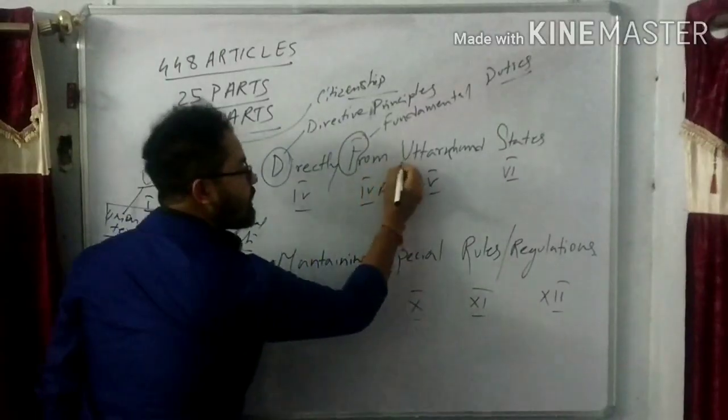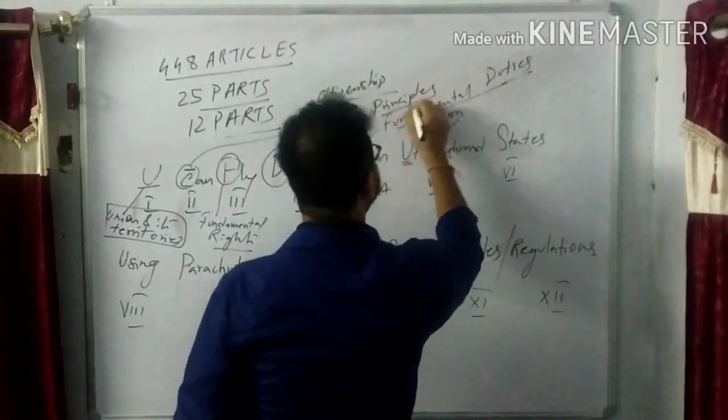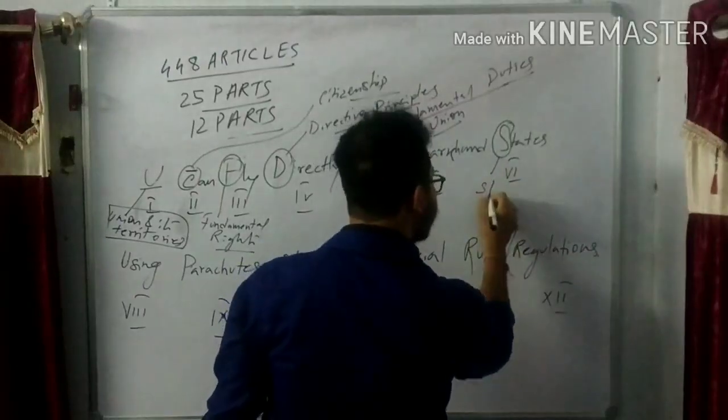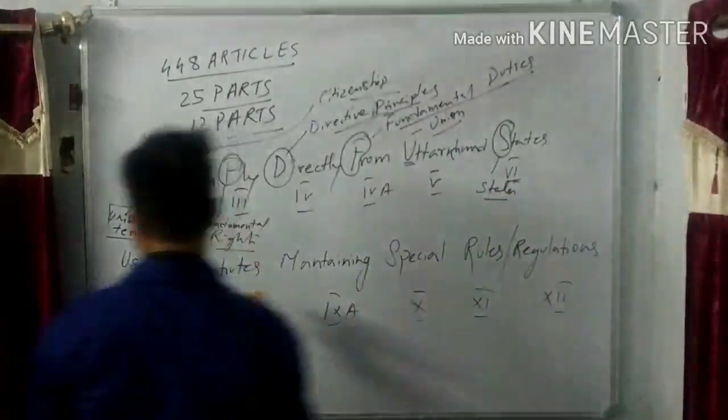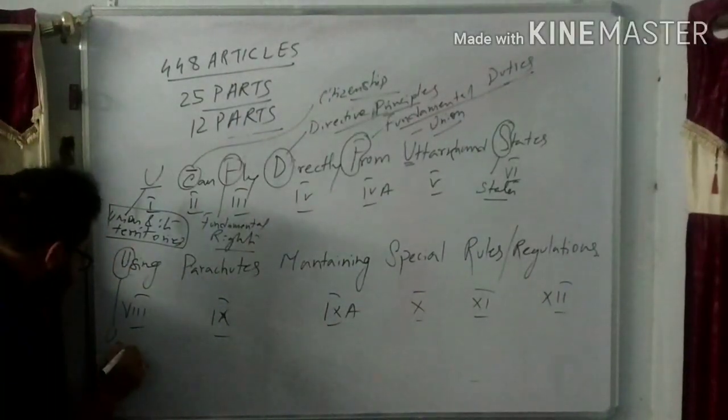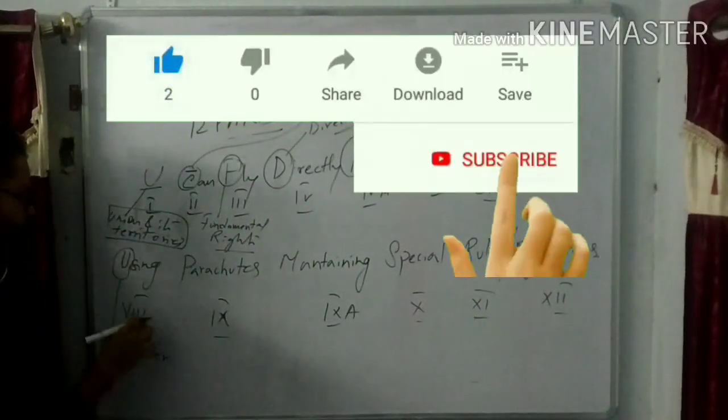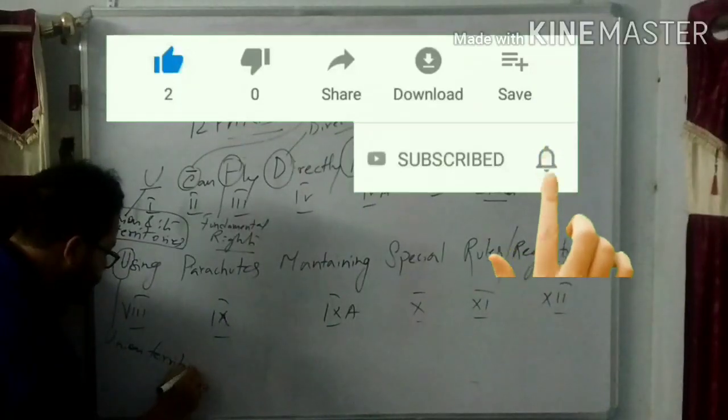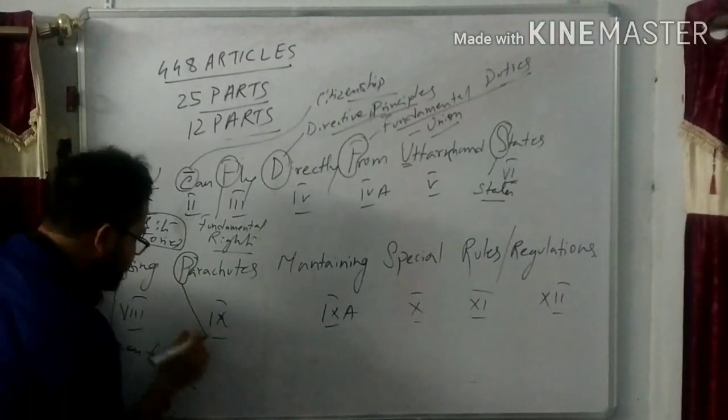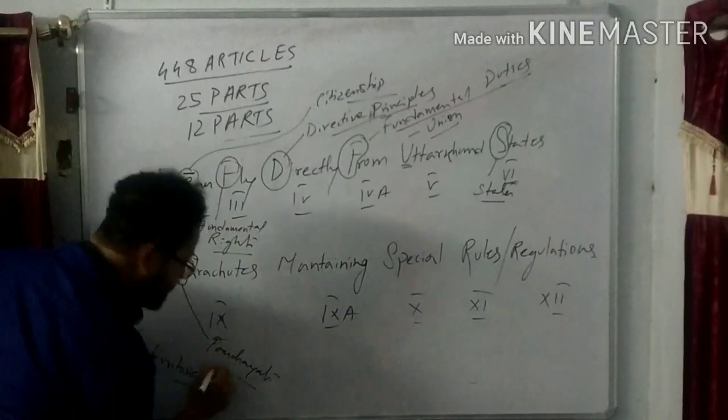Next, Uttarakhand - U stands for Union in Part 5. S stands for States in Part 6. The word 'using' - U stands for Union Territories in Part 8. P from parachutes stands for Panchayats in Part 9.